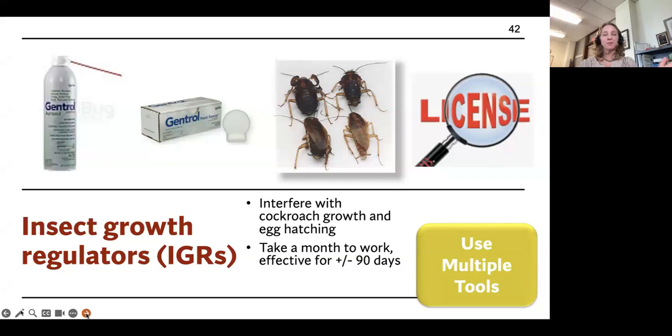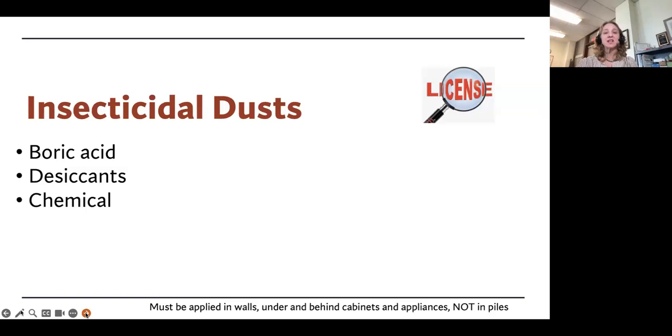Insect growth regulators are fabulous, really low toxic control. IGRs, insect growth regulators, prevent the cockroaches from developing into sexually reproductive adults. The products, the IGRs come in sprays, they come in baits. Most of the time they're already in the bait that your contractor is using. The important thing to remember here is they take a long time to work. So residents might get frustrated because they can take up to a month to really see the impact of them and lower the population.